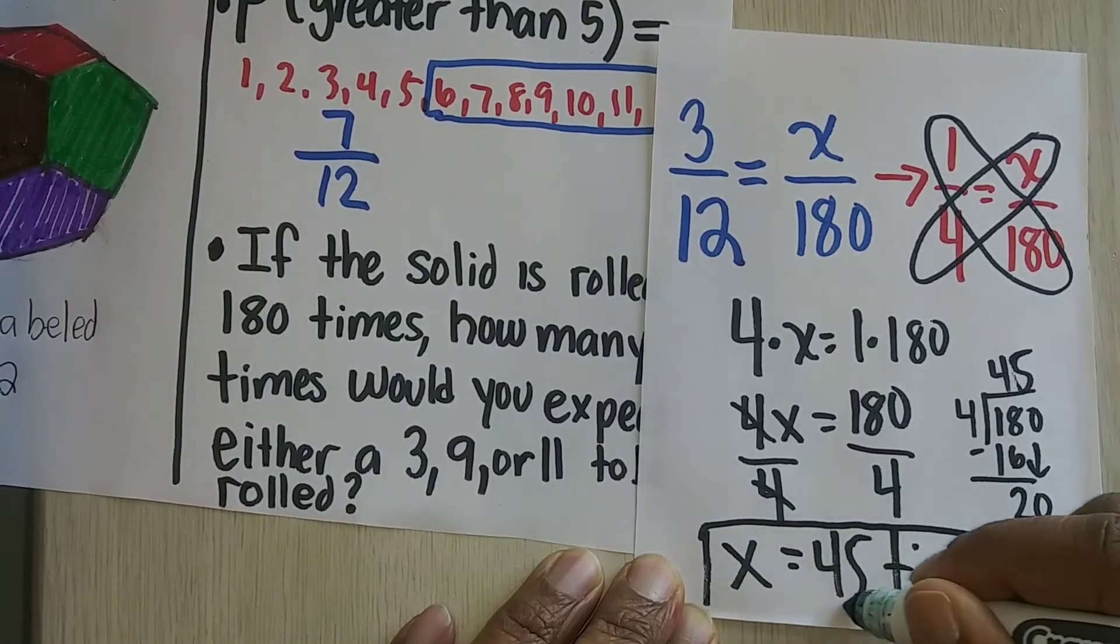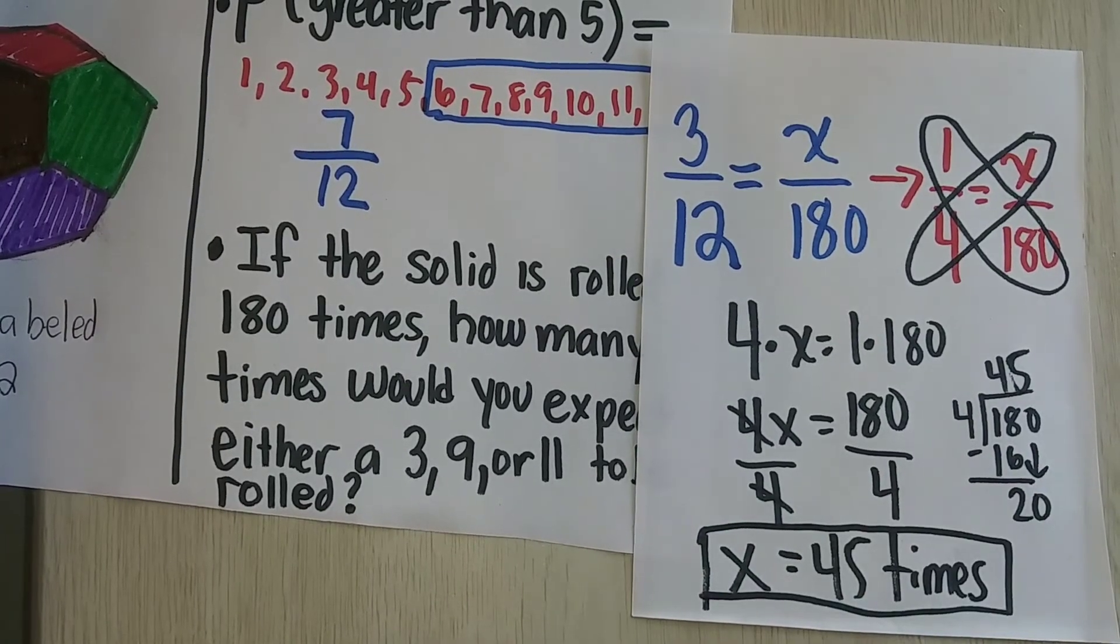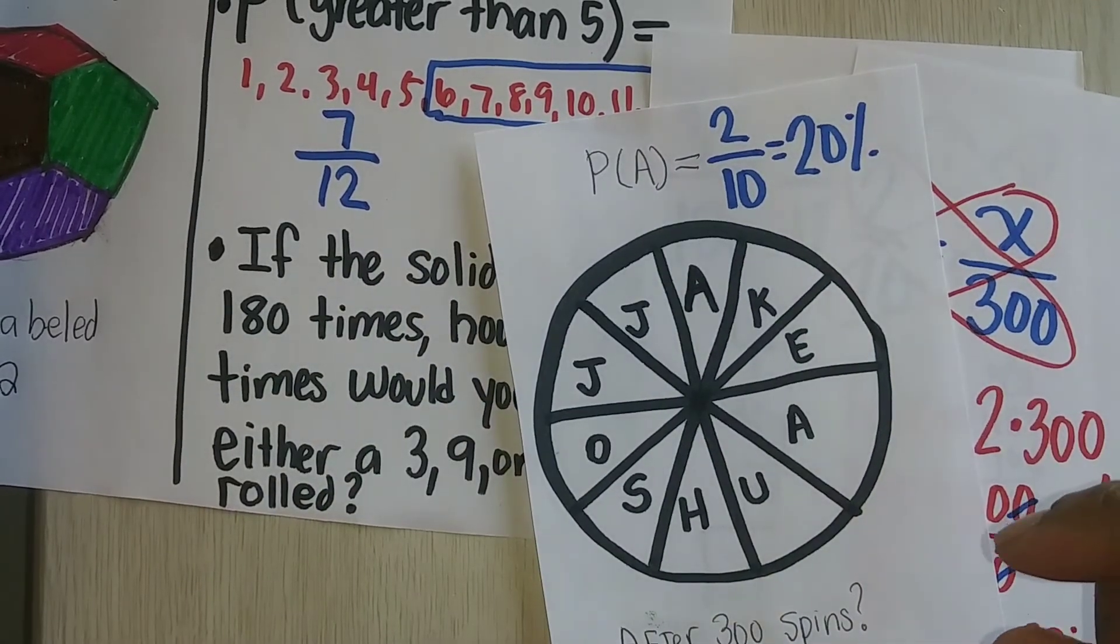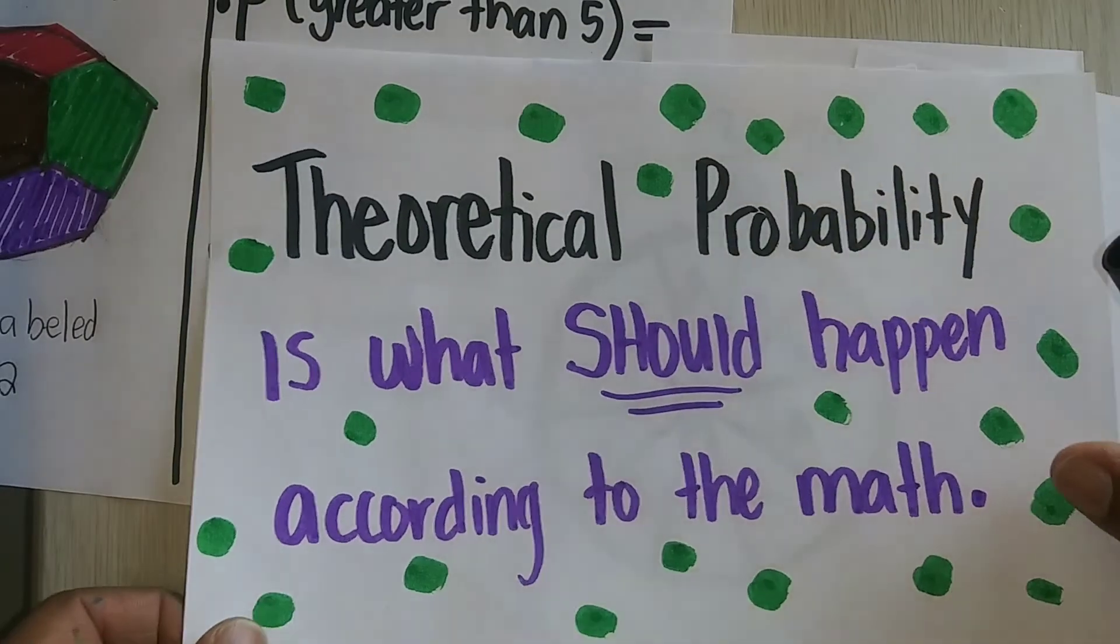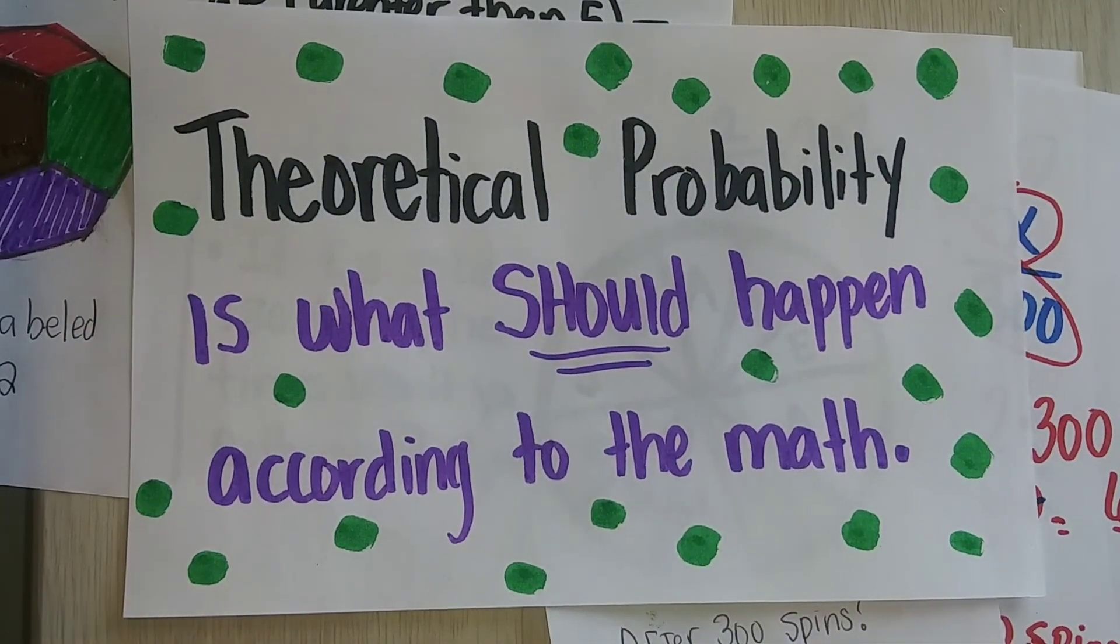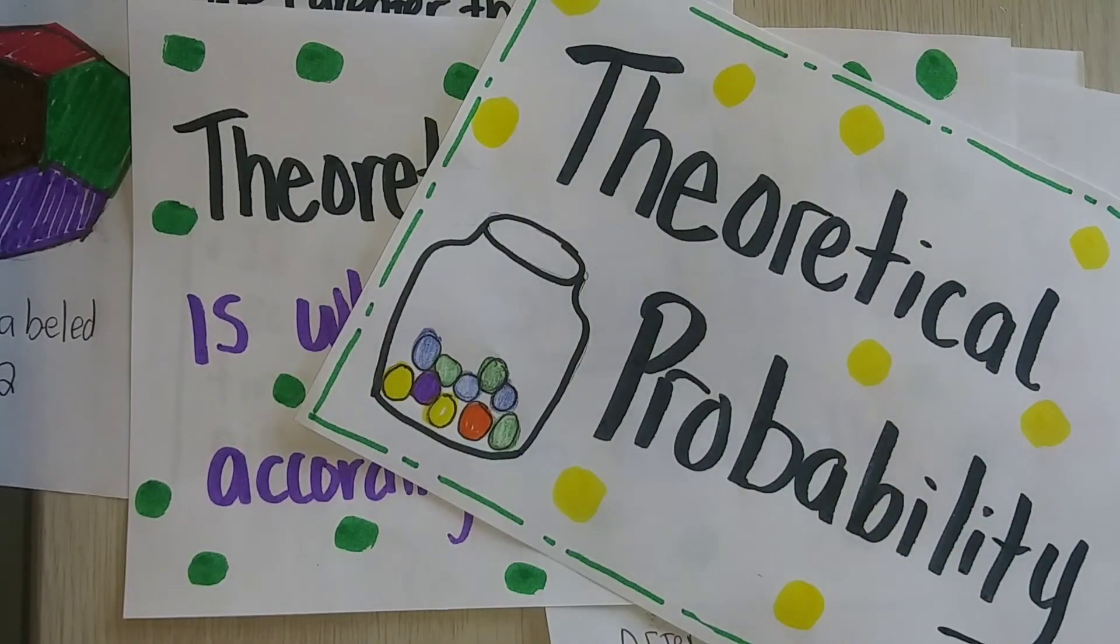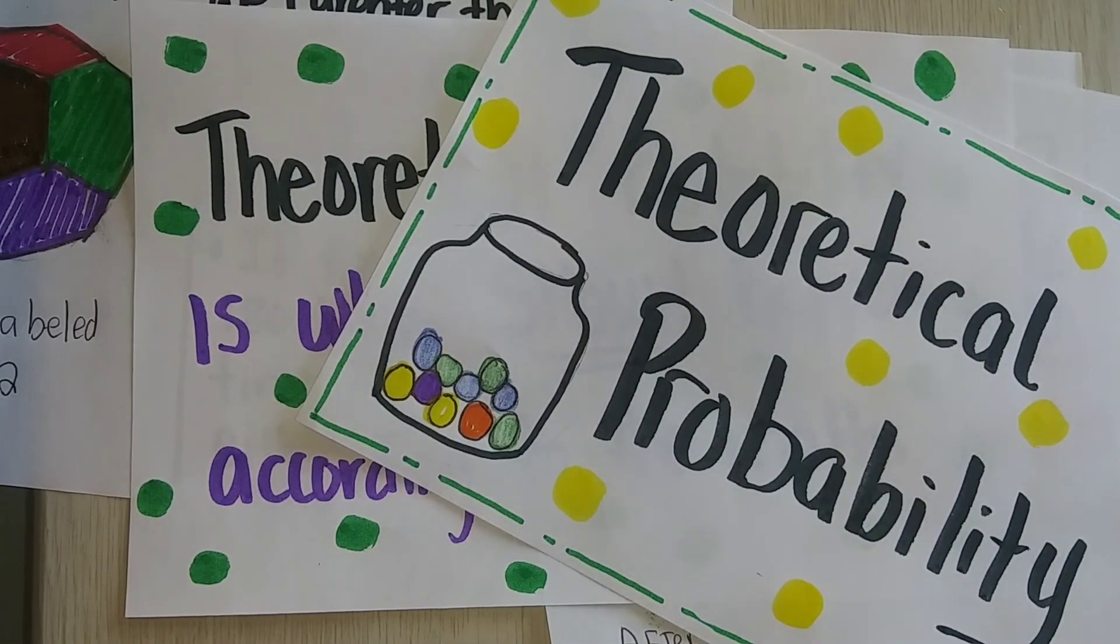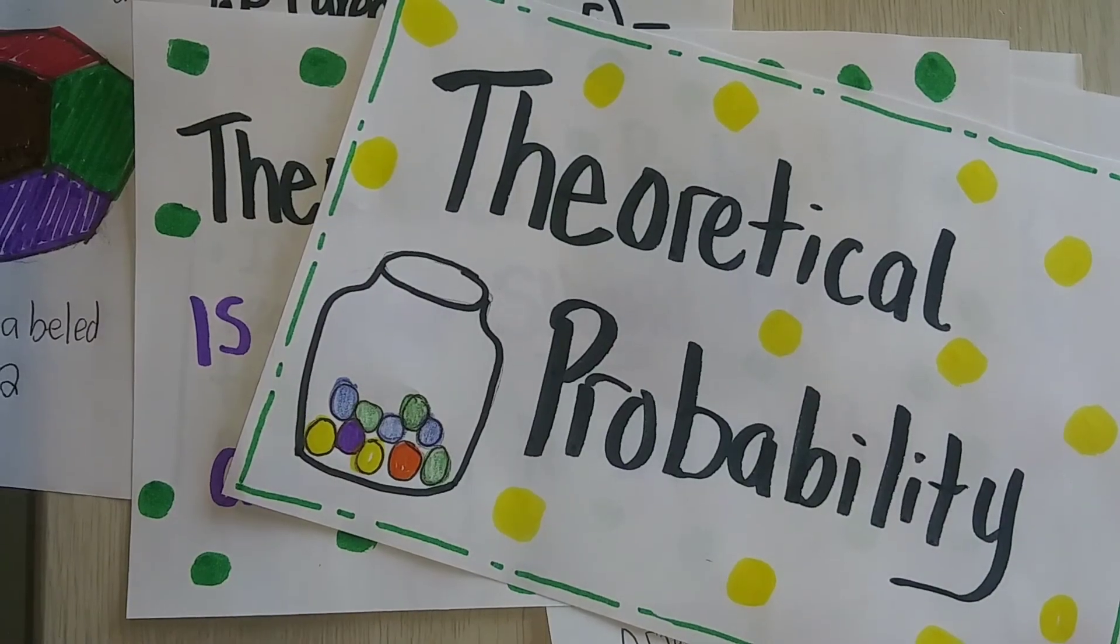Now, when we go on to the next video talking about experimental probability, you'll find out that that does not occur all the time. Theoretical probability is what should happen according to the math. And in this video, we talked about different ways to determine theoretical probability.